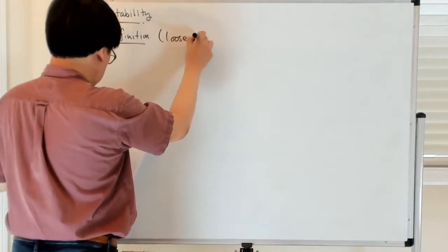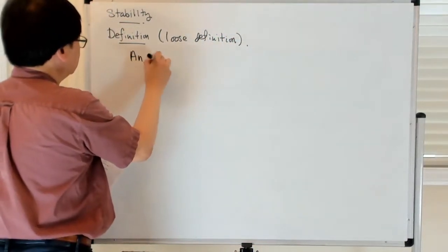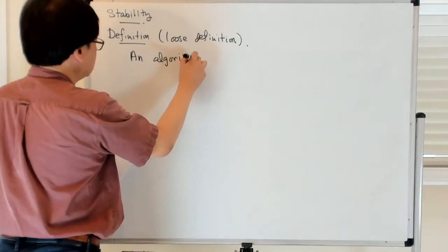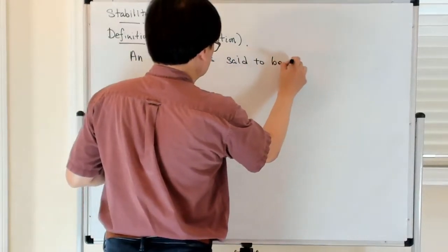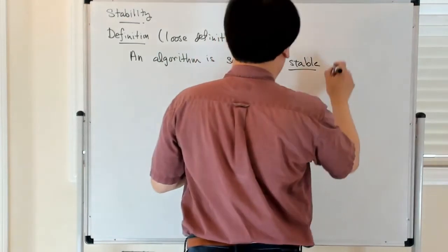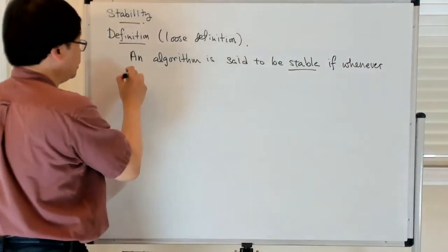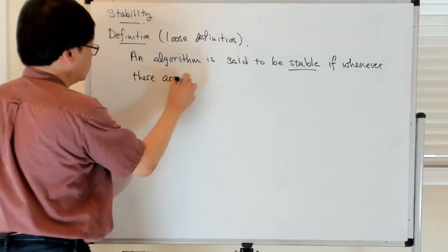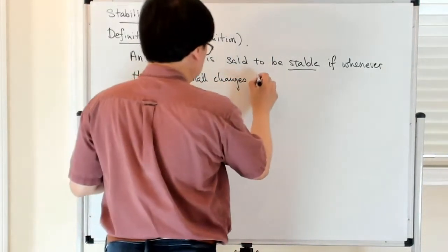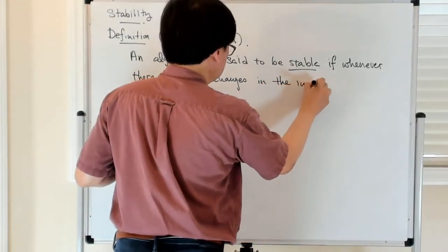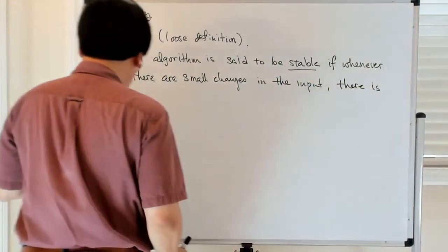An algorithm is said to be stable if whenever there are small changes in the input, there is a correspondingly small change in the output.